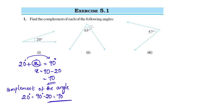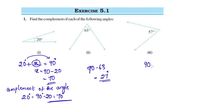The next angle is 63 degrees. The complement of 63 degrees is equal to 90 minus 63, which equals 27 degrees. The complement of the angle 57 degrees is equal to 90 degrees minus 57 degrees, which equals 33 degrees.